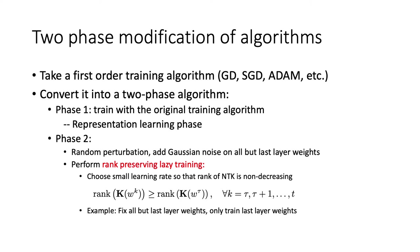First, let's talk about the two-phase modification of the algorithm. Let's take your favorite first-order stochastic training algorithm, or even non-stochastic algorithm like gradient descent. First, you can convert it into a two-phase algorithm.